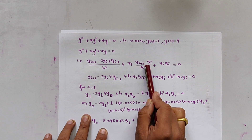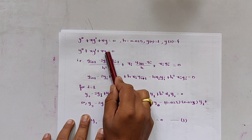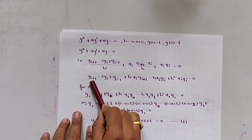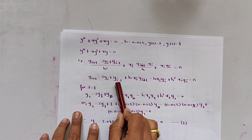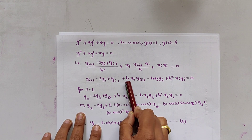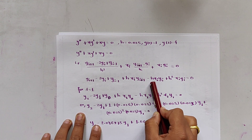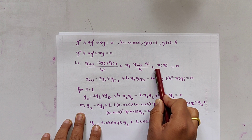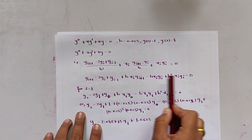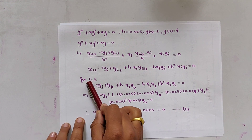And y' is approximated as (y_i+1 - y_i-1) / (2h). Substituting into the equation and simplifying, we get: y_i-1(1 + h·x_i/2) + y_i(-2 + h²·x_i) + y_i+1(1 - h·x_i/2) = 0.